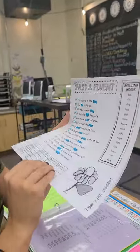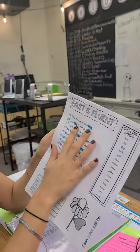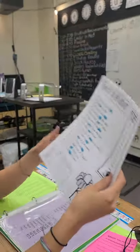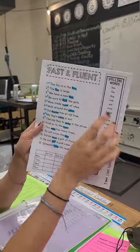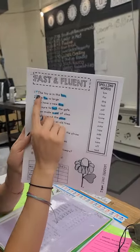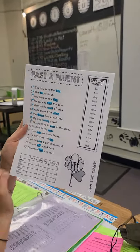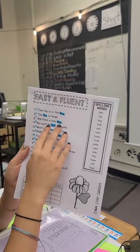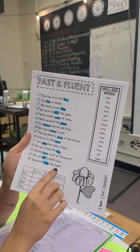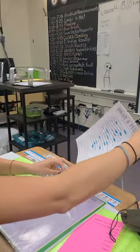At the end of the week, they will rip these off and they'll turn them in. So with fast and fluent pages, we'll keep them in the sleeve. And what you can do with them is time them for a minute and see how many sentences they read in one minute. If they don't finish within that minute, have them continue to read all 15 sentences just so that way they get a little bit faster and more fluent with reading.